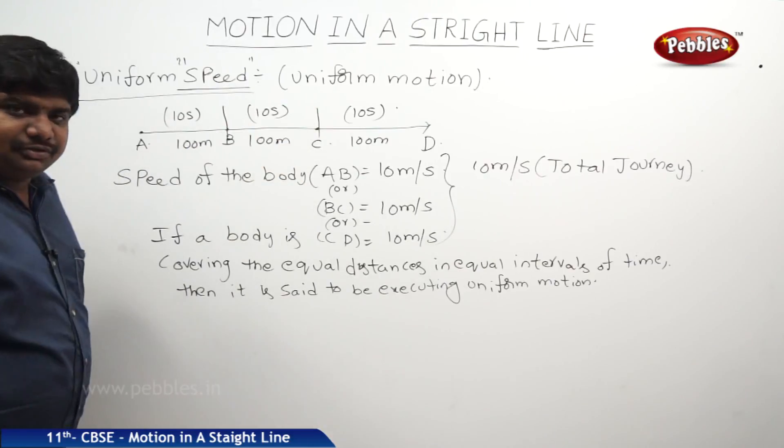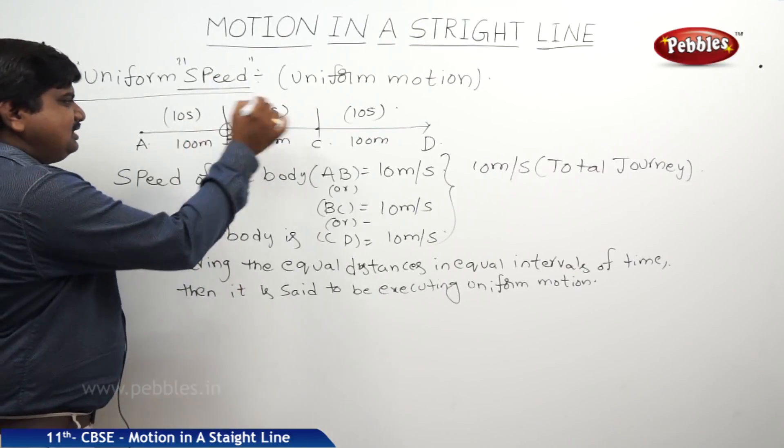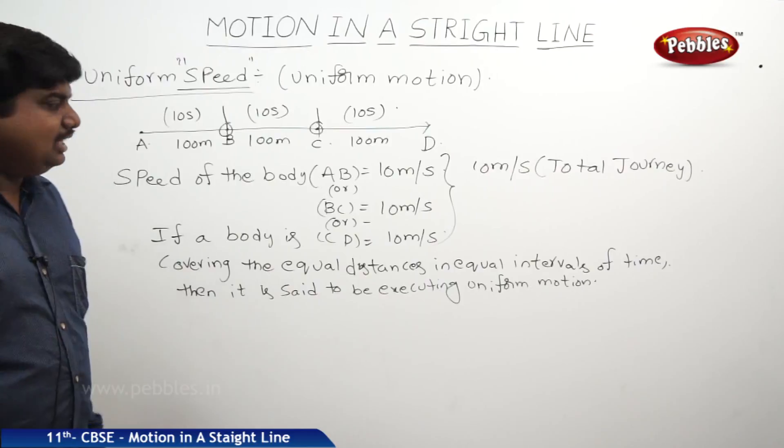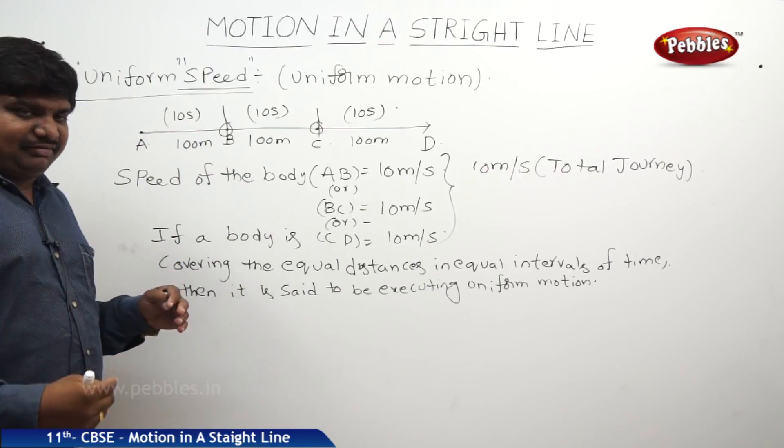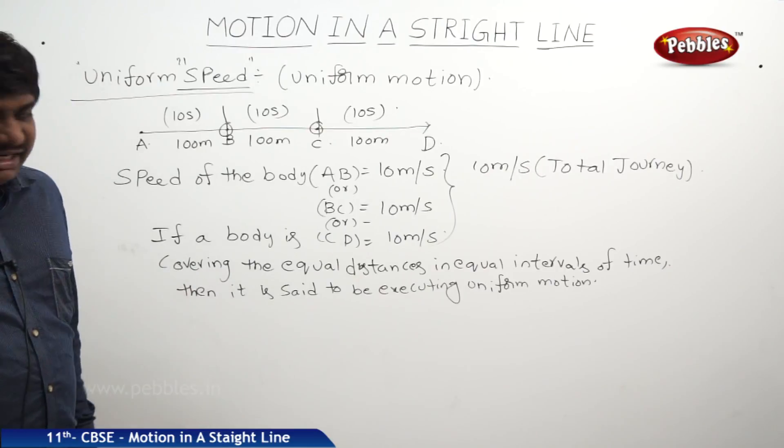Between A to B and B to C and C to D, at each and every point, let us take B and C, if you define the speed, the speed at a given particular time or at a given particular time interval is called instantaneous speed.